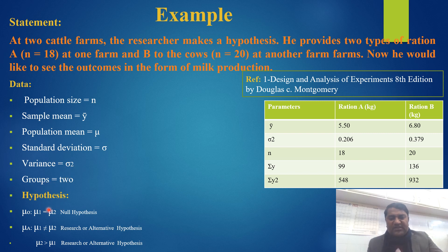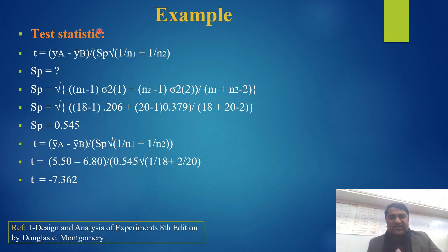There are two hypotheses. The null hypothesis is mu₁ equals mu₂ — meaning the two group means are equal. The alternative hypothesis is mu₁ is not equal to mu₂, which is the research or alternative hypothesis. Another form of the alternative hypothesis is mu₂ is greater than mu₁, also a research or directional alternative hypothesis.